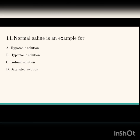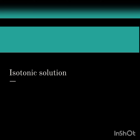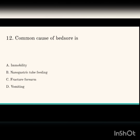Normal saline is an example of isotonic solution — the answer is isotonic solution. Next question: the common cause of bed sore. The options are immobility, nasogastric tube feeding, fracture of forearm, and vomiting. The cause of bed sore is immobility.